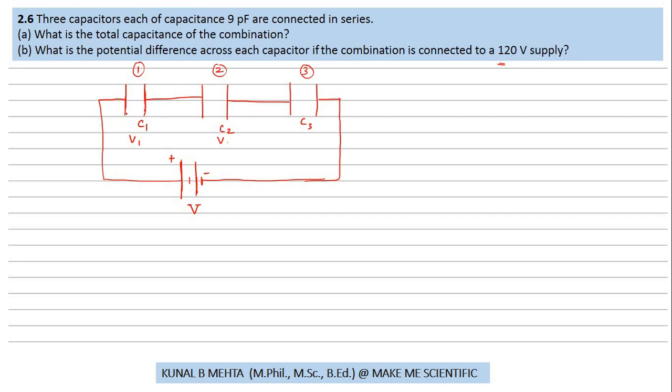So the potential difference between the two plates of capacitor one would be V1, then of two would be V2 and V3 would be the potential difference between both the plates of the third capacitor. And the sum of all the voltages should be equal to the total voltage of the battery. So this is the most important equation of the series connection.